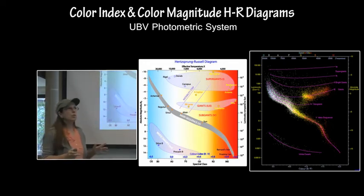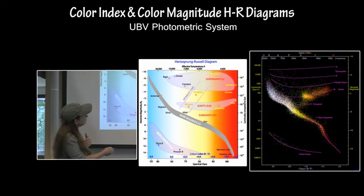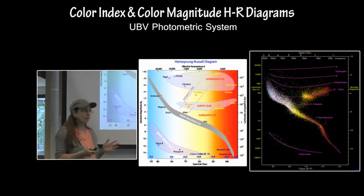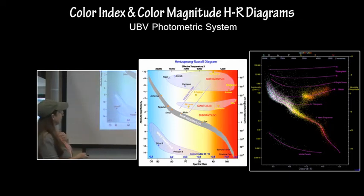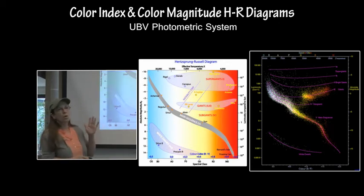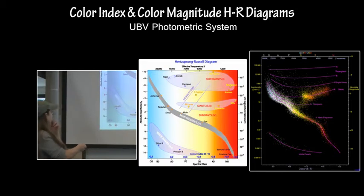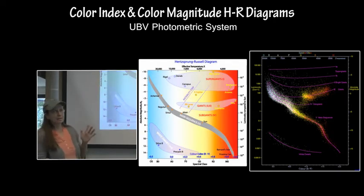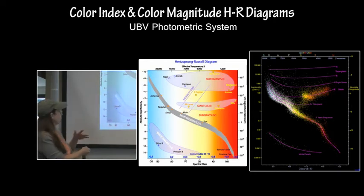Sometimes on the H.R. diagram you will see that instead of spectral classification or temperature, you will see the color index — B-V. The UBV photometric system was developed to compensate for the fact that photographic film favors the bluer, higher end of the spectrum. You will see the color index of either U-B, which is ultraviolet minus blue, or B-V, which is blue minus visible. A-subclass-zero stars are the zero point for the UBV system, with a color index of 0.0. As a star gets hotter, the index gets more negative; as it gets cooler, it gets more positive.